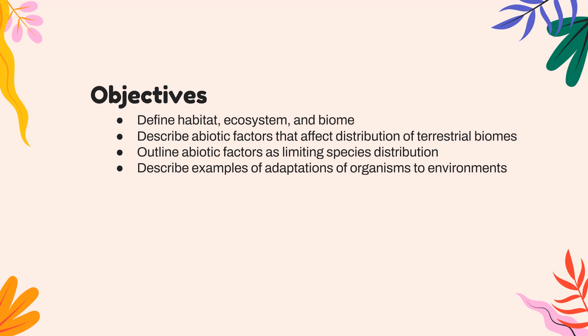Our objectives for today: we're going to define habitat, ecosystem, and biome. We're going to talk about some of the abiotic factors that affect the distribution of terrestrial biomes — those are the biomes on land, not in the water. We're also going to talk about abiotic factors that limit species distribution across the planet, and then lots of examples of adaptations of organisms to their environments.